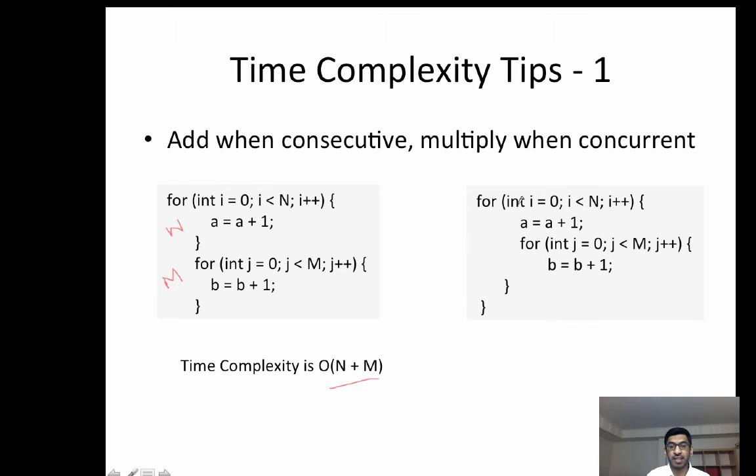On the other hand, on the right-hand side, again, the first loop is O of N. The second loop is obviously O of M. But since they are nested within each other, you multiply. The time complexity is N times M. Huge difference.